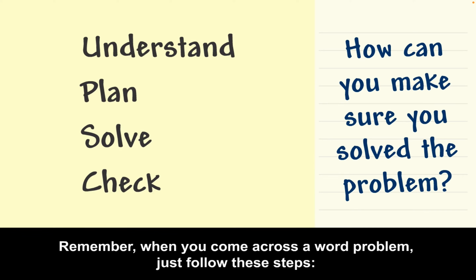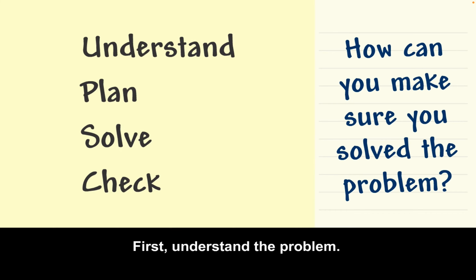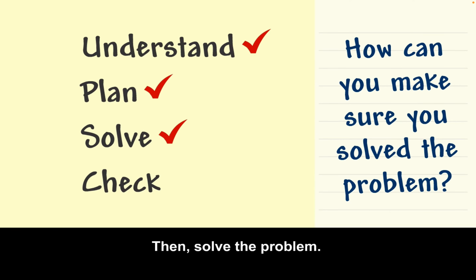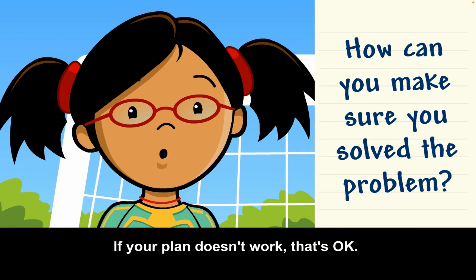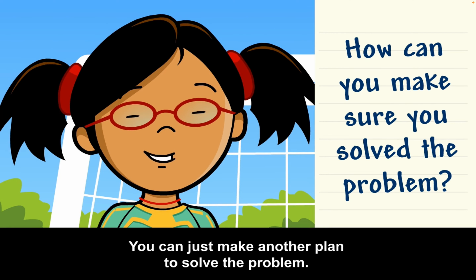Remember, when you come across a word problem, just follow these steps. First, understand the problem. Next, make a plan to solve it. Then, solve the problem. Finally, check your work. If your plan doesn't work, that's okay — you can just make another plan to solve the problem.